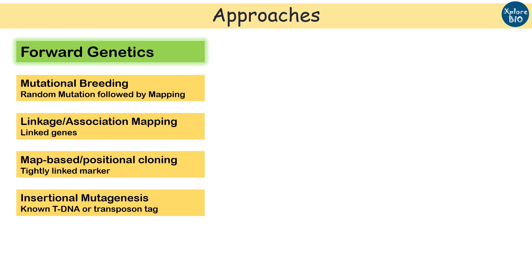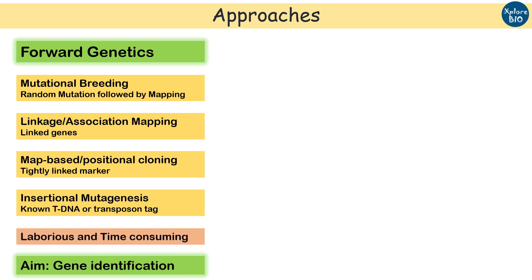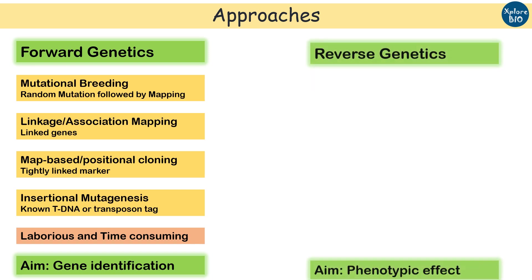Another forward genetics approach is insertional mutagenesis using T-DNA insertion or transposon tagging, where a known sequence tag is randomly incorporated into the genome to observe its effect on the phenotype. In all these approaches, the aim is identification of genes responsible for a particular phenotypic trait. Compared to reverse genetics, these approaches are more laborious and time-consuming.